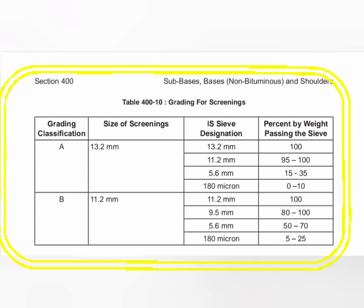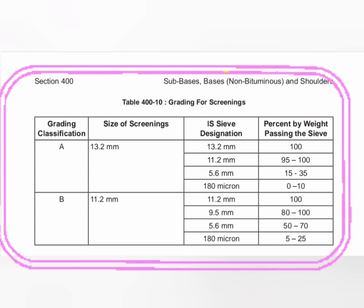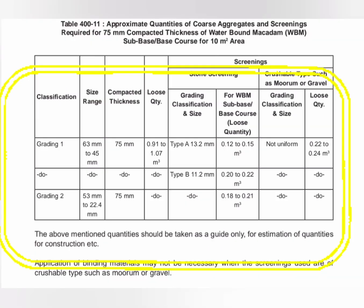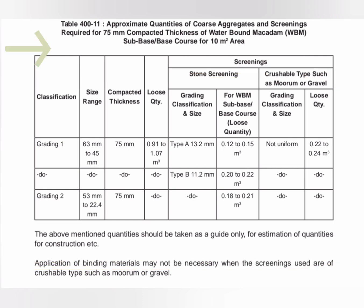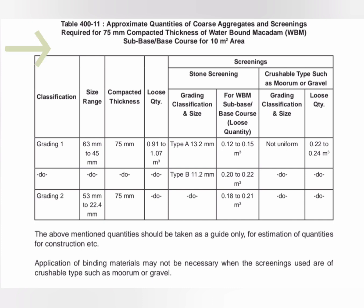Table 411 gives approximate quantities of coarse aggregate and screenings required for 75 mm compacted thickness of WBM. It includes classification, size range, compacted thickness, loose quantity, screening types — stone screening or crushable types such as moorum or gravel screening.